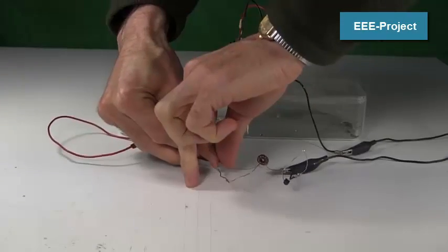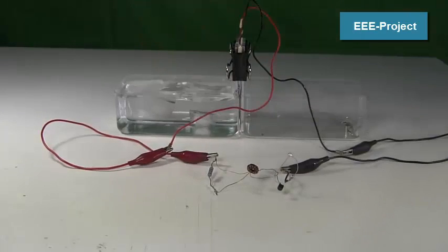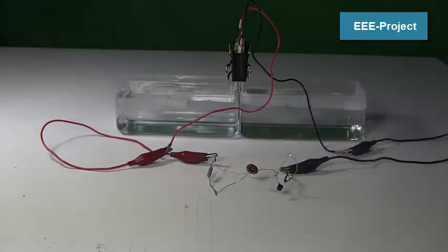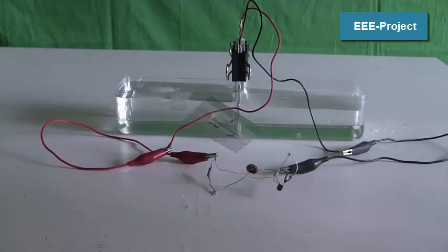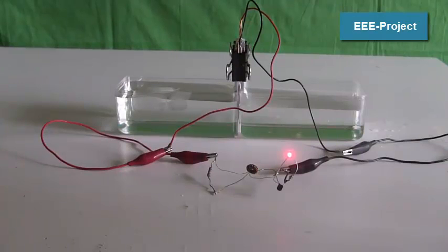So I connect the joule thief circuit to the Peltier module. I again put cold water and ice in one container, and boiling hot water in the other. Sure enough, 12 seconds later, when enough heat has made its way up to the Peltier module, the Peltier module is generating enough electricity to light the LED with the help of the joule thief circuit.